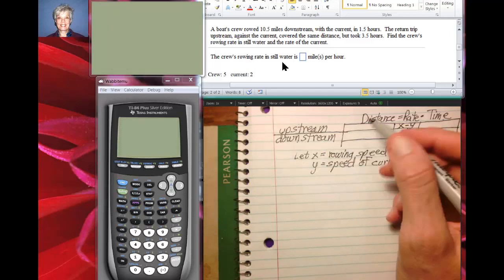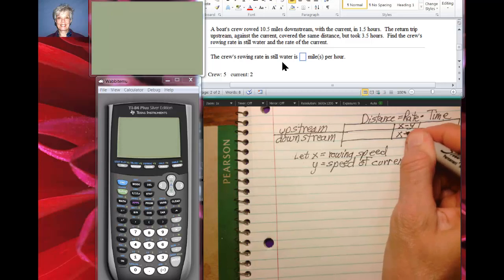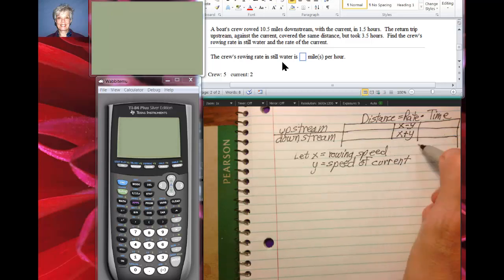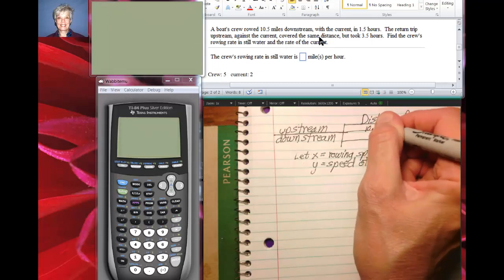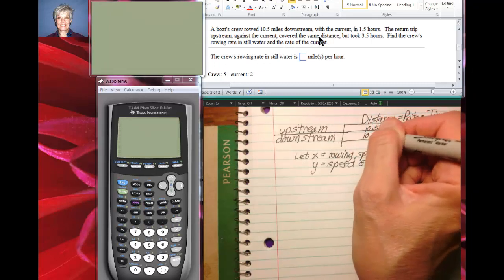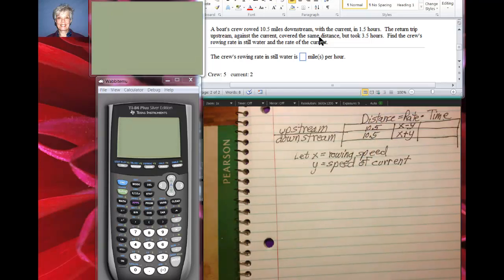When you go downstream with the current, the current speeds you up. So you go faster because you've got the rowing speed plus the current both in the same direction. Now this says that they went 10.5 miles downstream and the return trip covered the same distance. So the boat travels 10.5 miles upstream and 10.5 miles downstream. The only difference is in the time. When they go upstream it takes longer. So the bigger number is going to go in your upstream column for time. And your smaller number is going to go in the downstream column for time because when you go faster it takes less time.